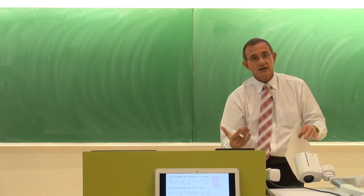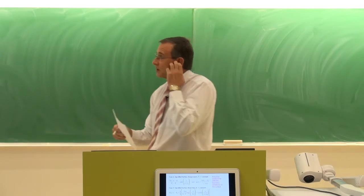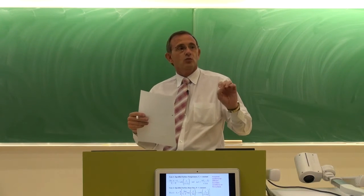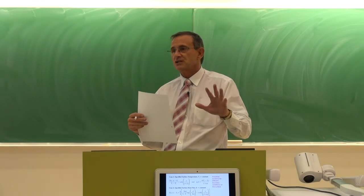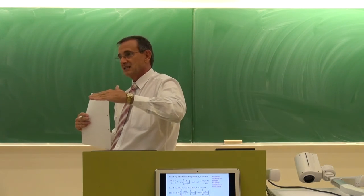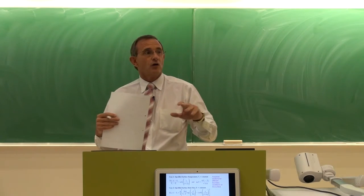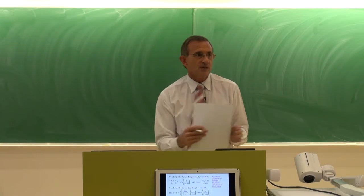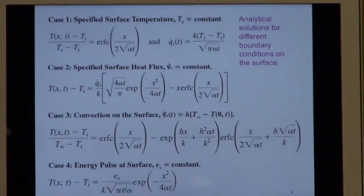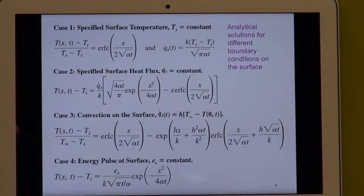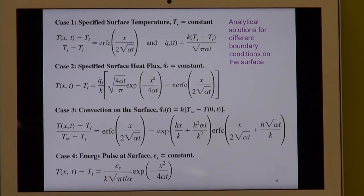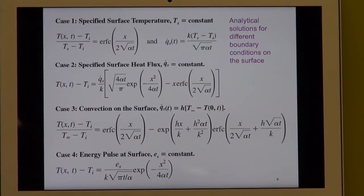Let me do some examples now to make it clearer. With the semi-infinite solid, we looked at the derivation with a first set of boundary conditions: a flat surface with a temperature T_S at t equals 0. But there are three other cases. The first one is a specified surface temperature. The second one is the surface heat flux. The third one is convection on the surface. And the fourth one is the energy pulse.